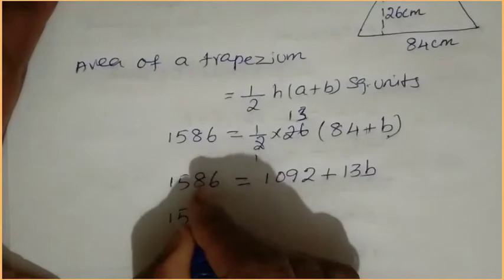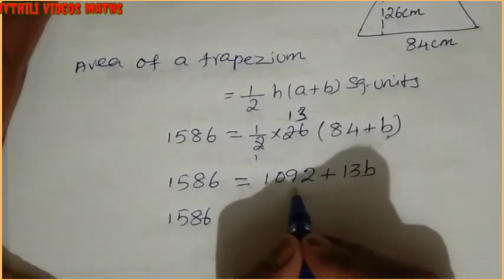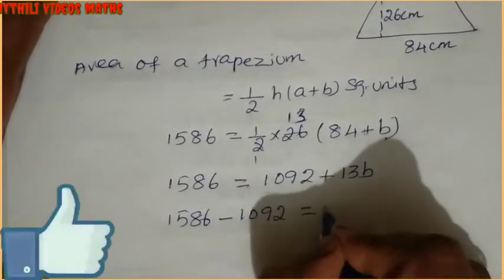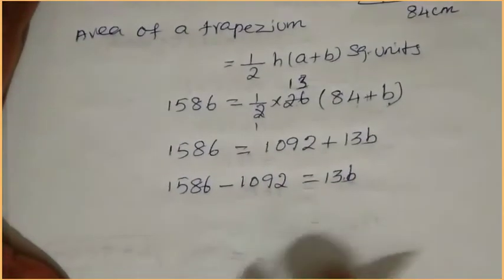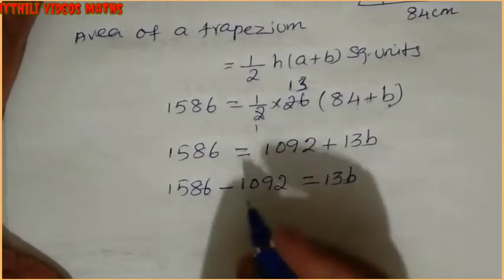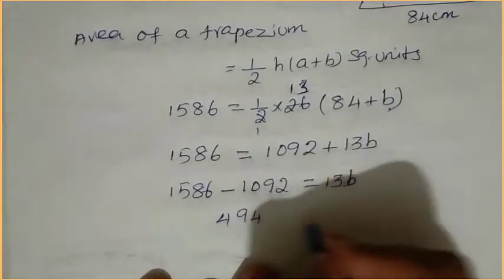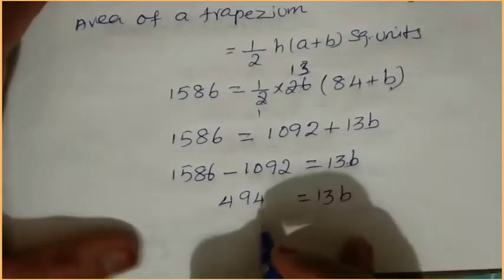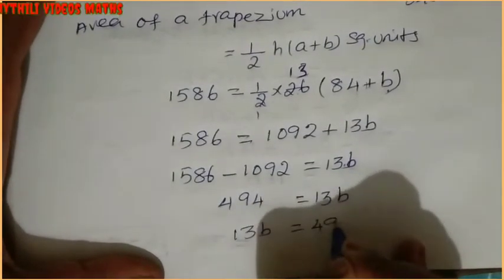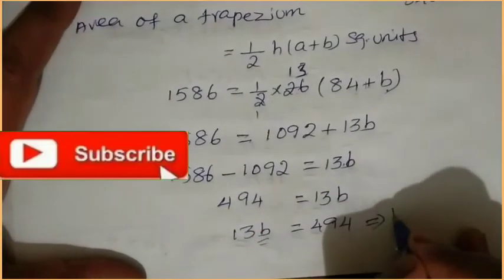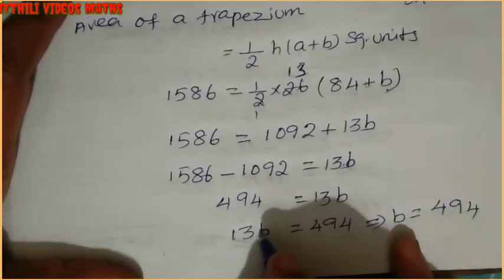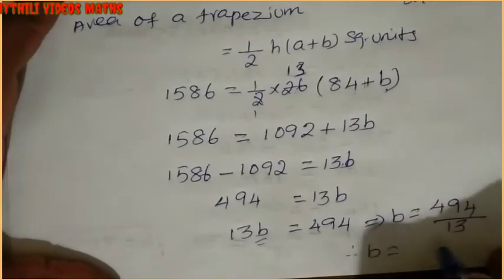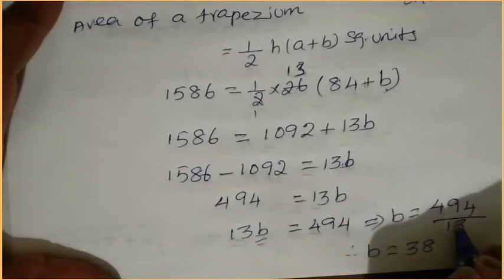We want only B value. So subtract 1092 from both sides: 1586 minus 1092 equals 494. So 13B equals 494. Taking 13 to the right-hand side means division: B equals 494 divided by 13. Cancel — 38 times 13 equals 494. Therefore B equals 38 centimeters.